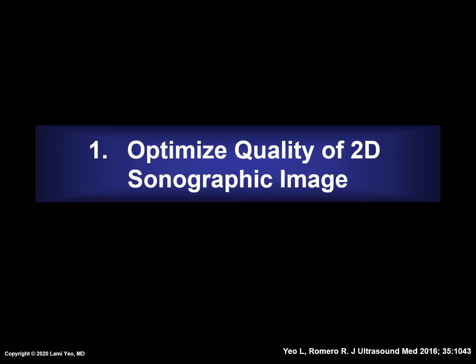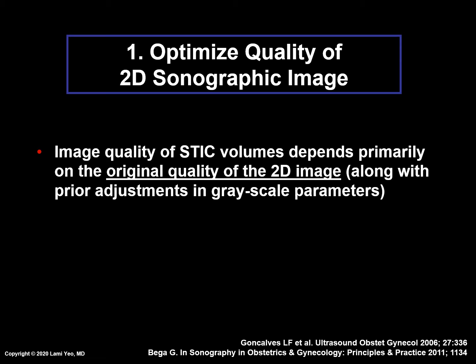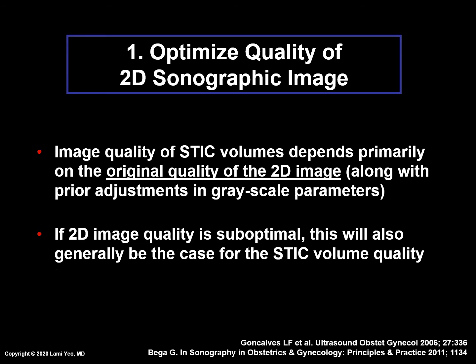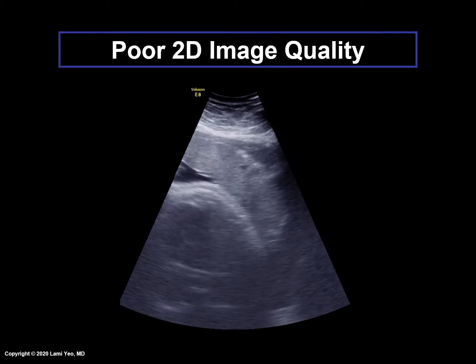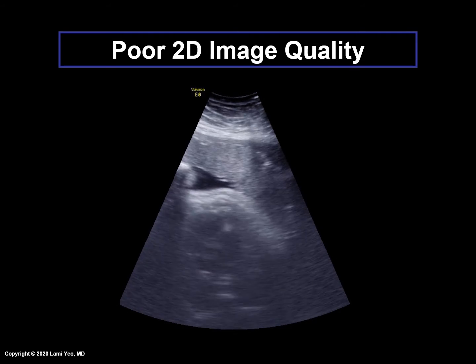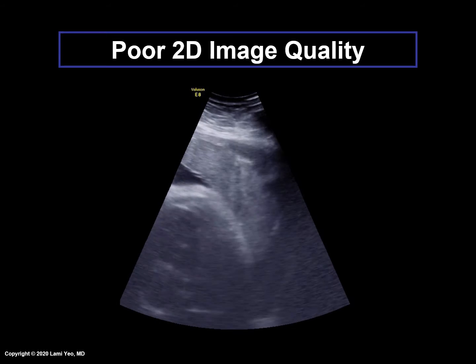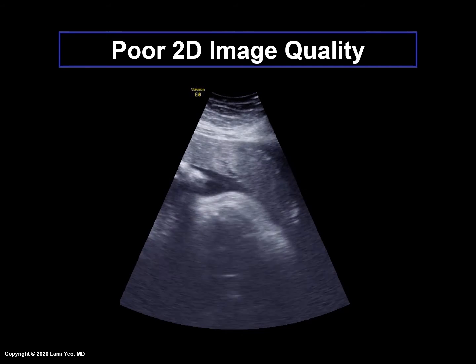The first important step before acquiring STIC volumes for the FINE method is to optimize the quality of the two-dimensional sonographic image. This is because the image quality of STIC volumes depends primarily on the original quality of the two-dimensional image, along with any prior adjustments and grayscale parameters. If the 2D image quality is suboptimal, for example due to acoustic shadowing or maternal habitus, this will also generally be the case for the STIC volume quality. Here is an example of very poor image quality — the fetal heart is not adequately visualized, and therefore if a STIC volume is acquired, the image quality will also be very poor and uninformative.